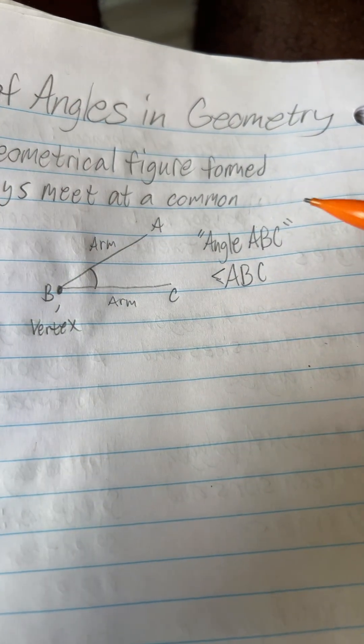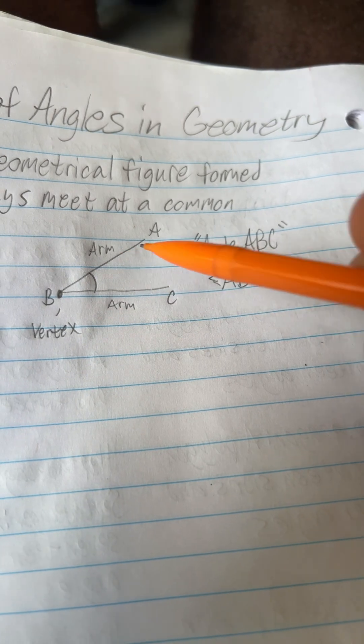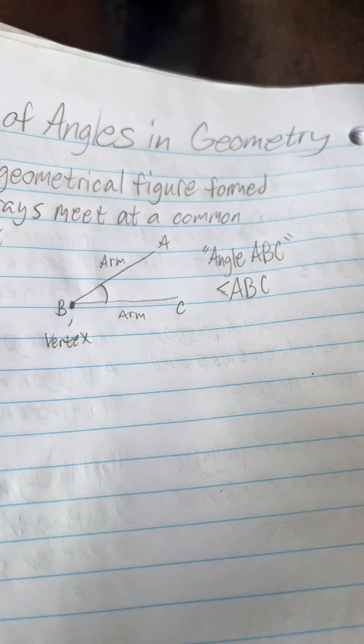So this is angle ABC. So you got these two arms and you got this point right here. That is the vertex.